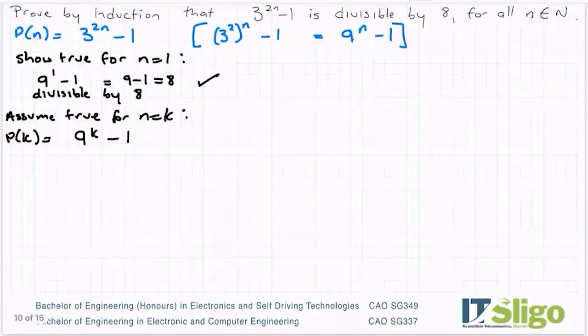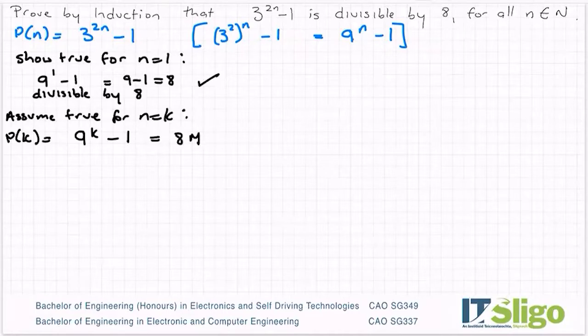In other words, it divided in. So what I'm going to say is that would be equal to 8m, where m just stands for a whole number. Because obviously if you divide 8 into something and it's divisible by 8, it's going to divide in evenly and m is going to be a whole number.